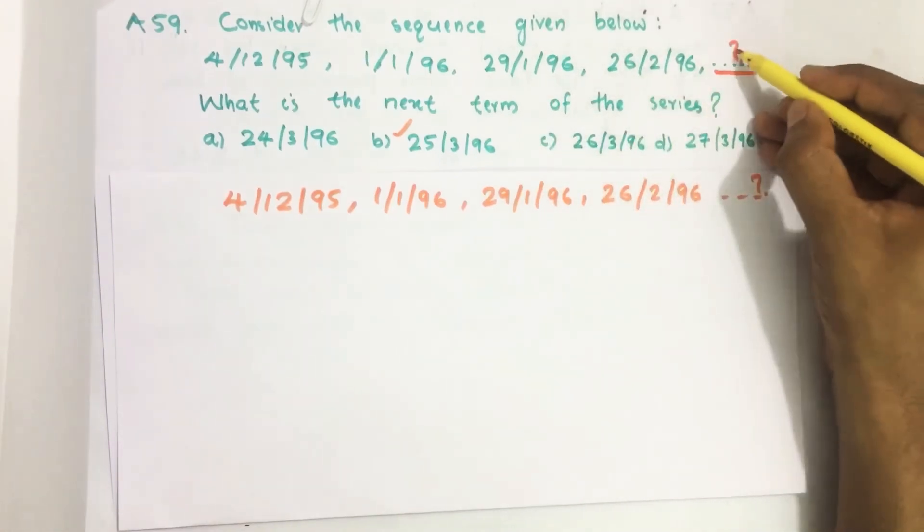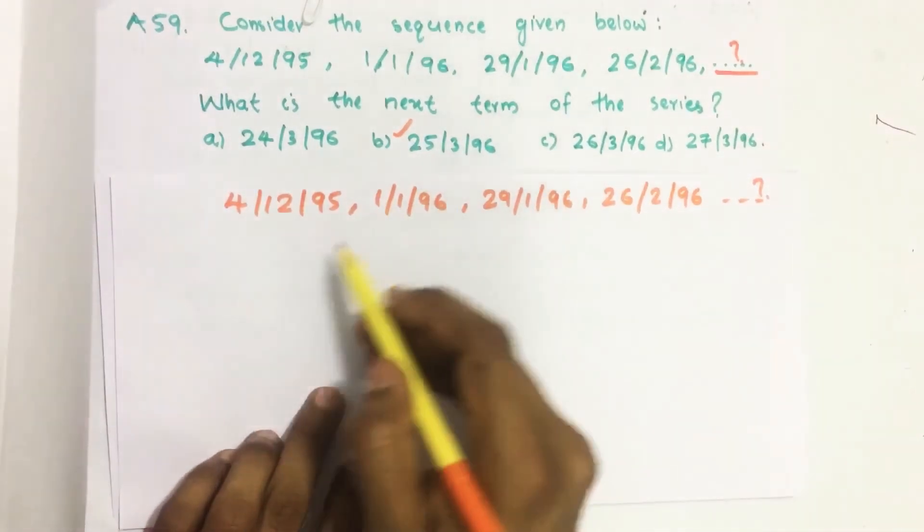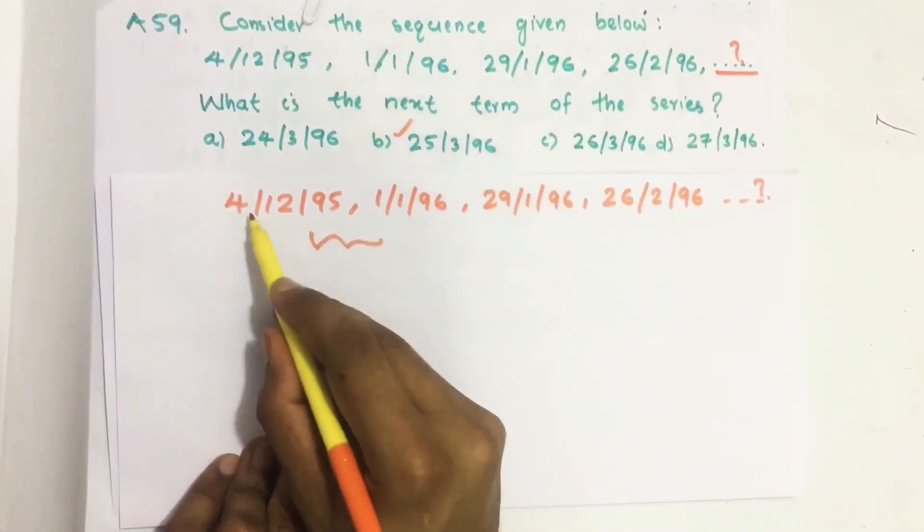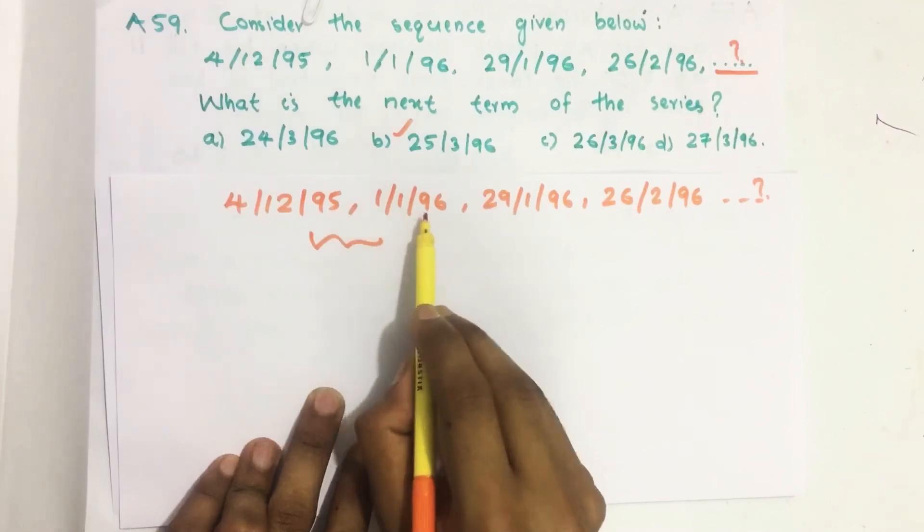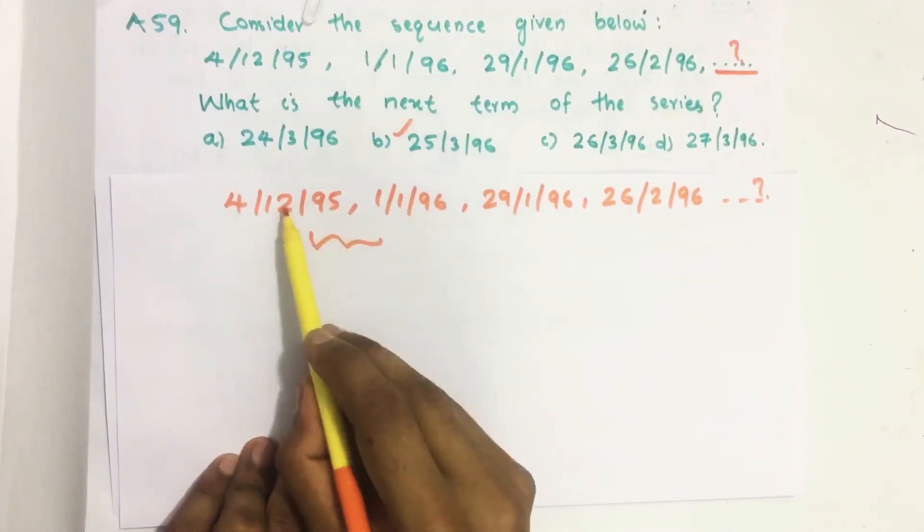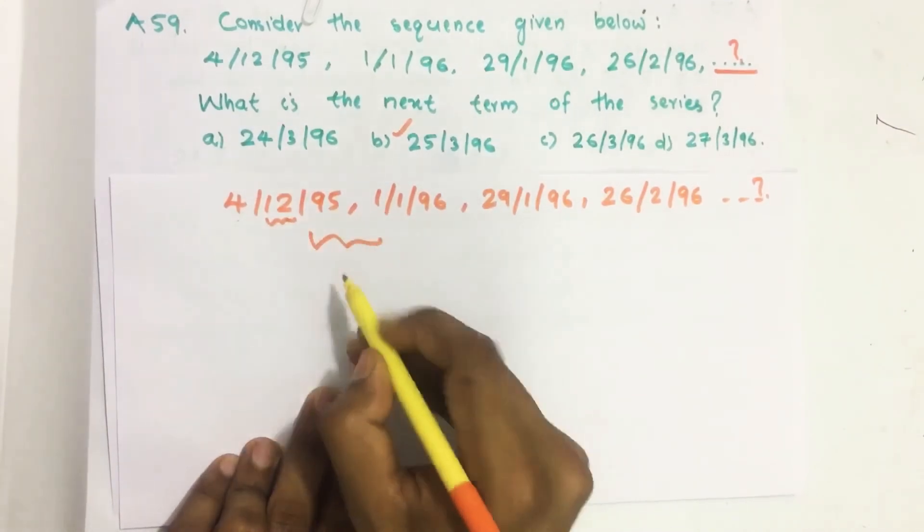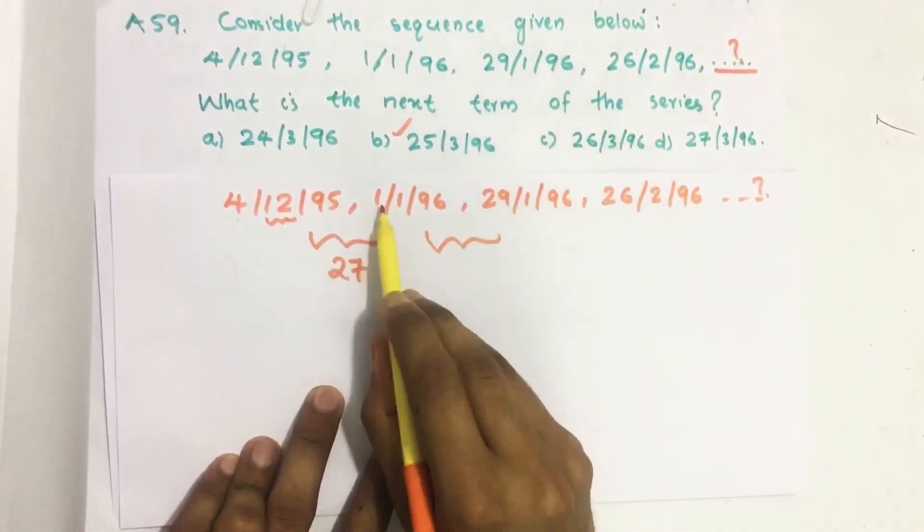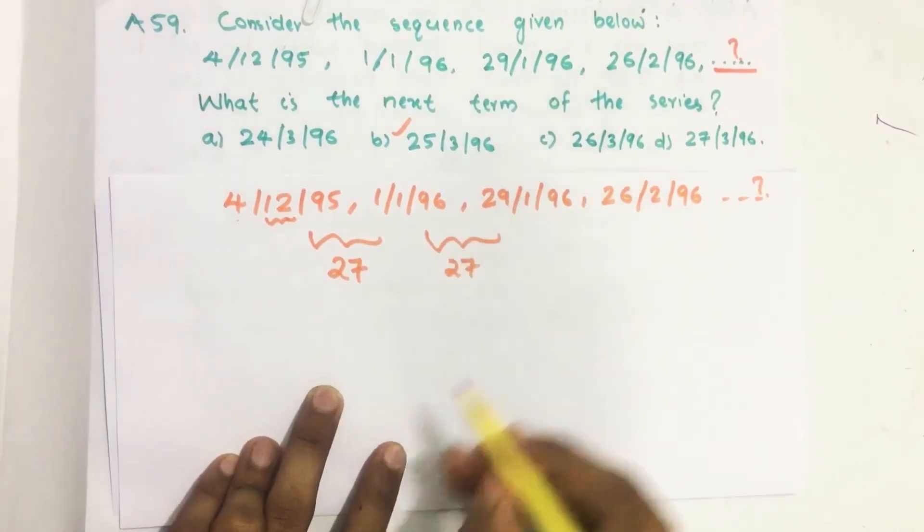So we have to find what is the next date. Let us see what is the relationship between these dates. From 4th December 1995 to 1st January 1996, December is a 31 day month, so from 4th to 1st in between there are 27 days. Here from 1st January to 29th January in between there are 27 days.